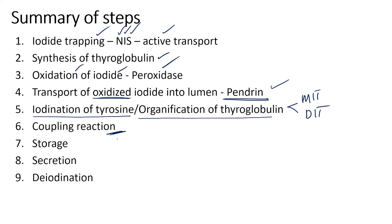Next is the coupling reaction: MIT combines with DIT to form T3, and DIT combines with DIT to form T4. These hormones along with thyroglobulin can be stored in the follicular lumen colloid for two to three months. When the body requires them, pinocytosis occurs, the colloidal droplet fuses with lysosomes, and proteases cleave out T3, T4, and reverse T3, which are secreted into the circulation via the basolateral membrane. MIT and DIT are also cleaved, undergo deiodination, and the released iodide is reutilized for T3 and T4 synthesis.